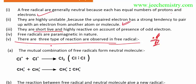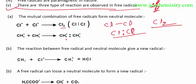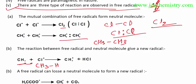There are three types of reactions observed in free radicals. First: mutual combination of free radicals to form a neutral molecule — for example, Cl• + Cl• forms Cl2, or two methyl radicals combine to form ethane. Second: reaction between a free radical and a neutral molecule gives a new free radical.